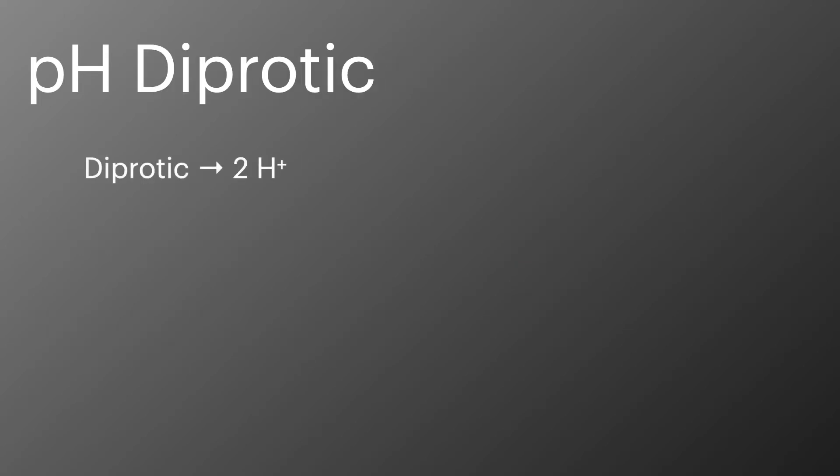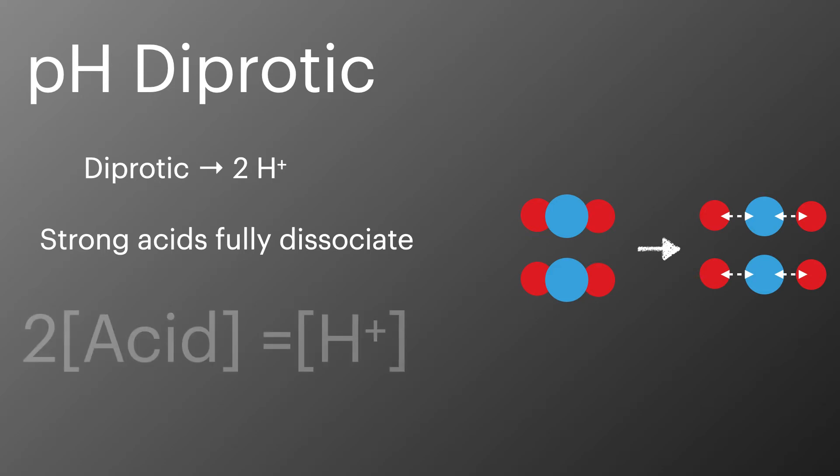Diprotic acids contain two protons. If we assume they are strong acids and they fully dissociate, an example of this would be sulfuric acid. Then the concentration of the hydrogen ions will be equal to twice the concentration of the acid.